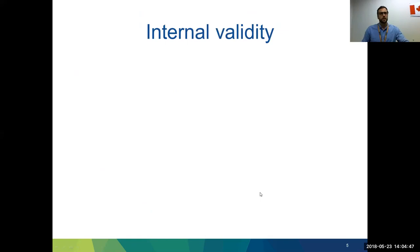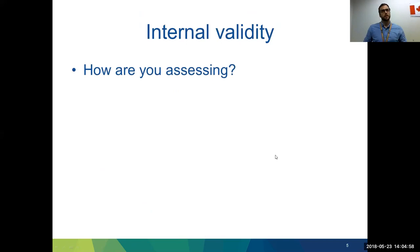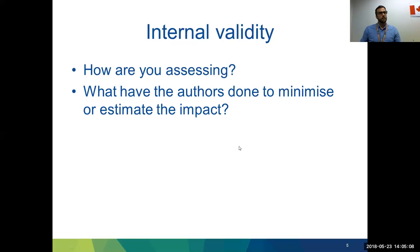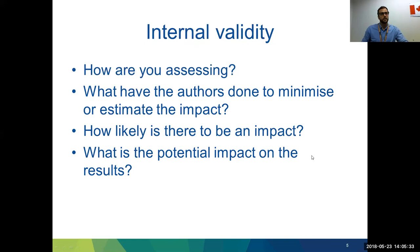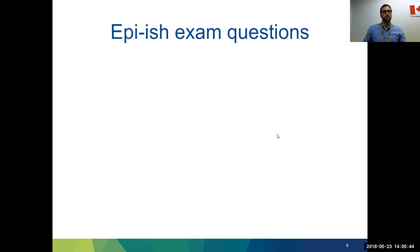Going through the key components of internal validity: for each component — whether bias or confounding — think about how you're actually assessing it when reading the paper. Consider what the authors have done to minimize or estimate the impact of any bias or confounding. It's not enough to just say you're looking for selection bias; you need to assess how likely any impact might be and how it could affect the study results.